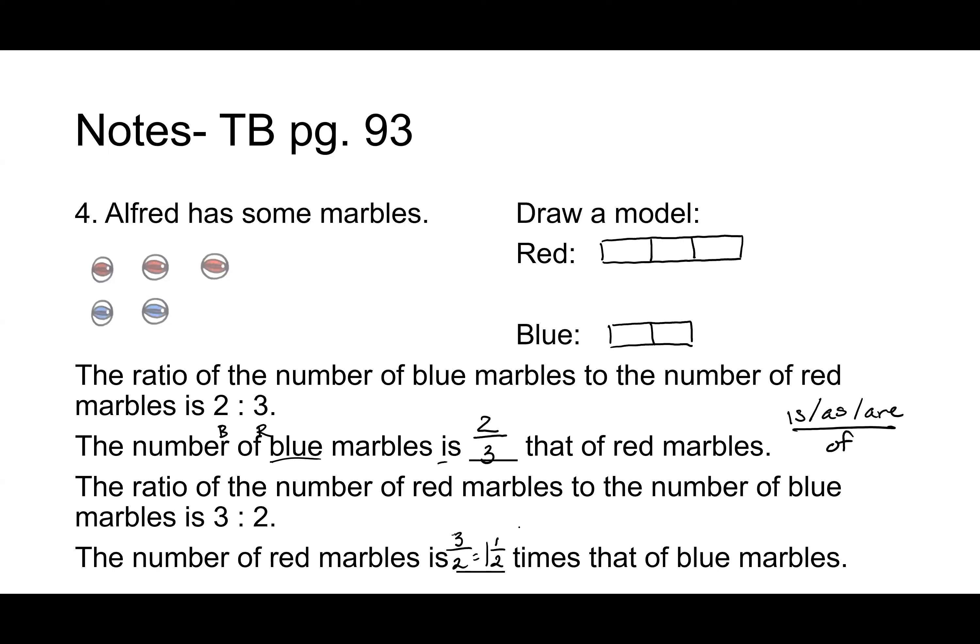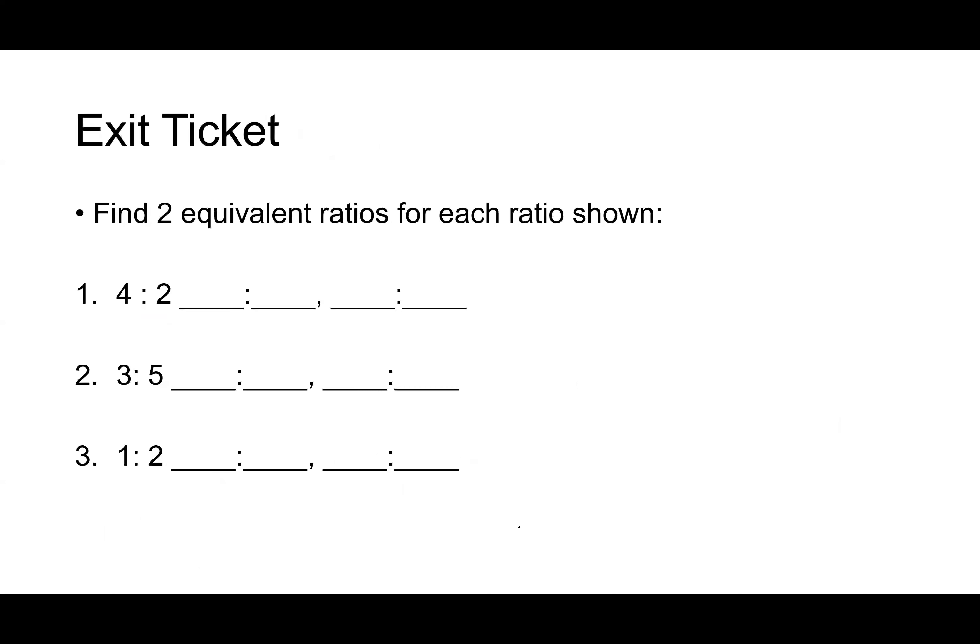Who's feeling confident with this? Great. Your exit ticket has you finding two equivalent ratios for each ratio shown.